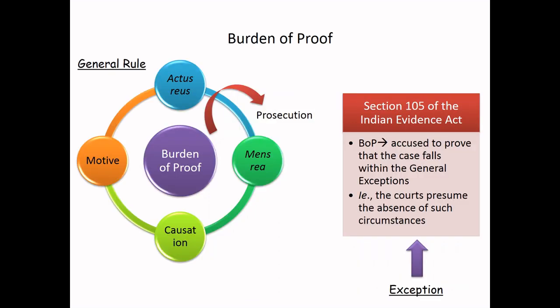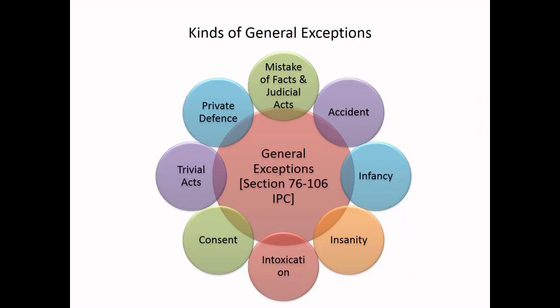Now let us see the burden of proof aspect of general exceptions. Generally, the burden of proving the guilt of the accused lies on the prosecution. The public prosecutor is bound to prove the actus reus, the mens rea, causation, motive, etc. But in the case of general exceptions, the burden of proving the fact that the particular criminal act fell within the general exceptions chapter very well lies on the accused himself.